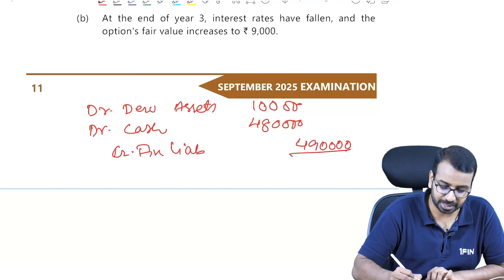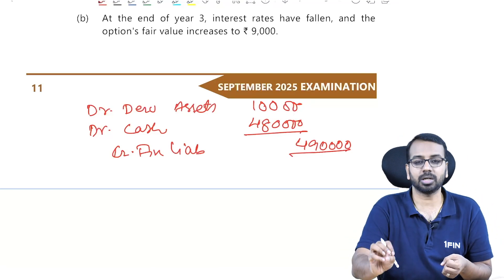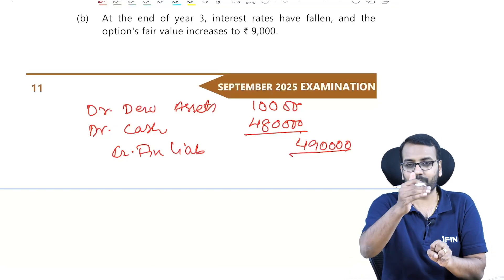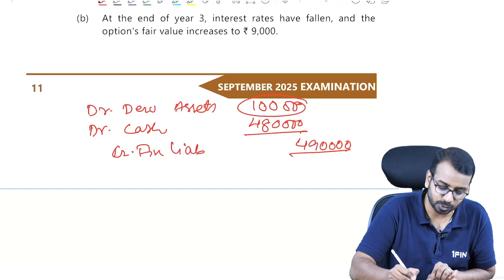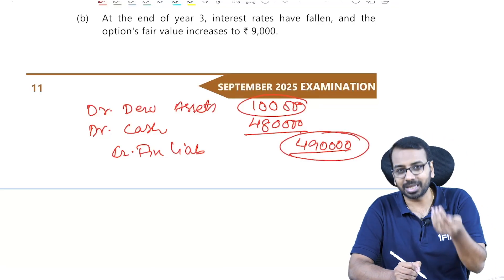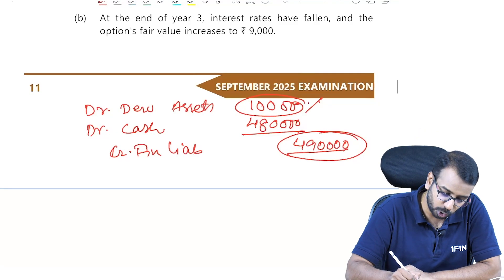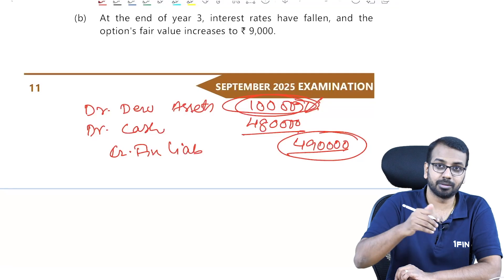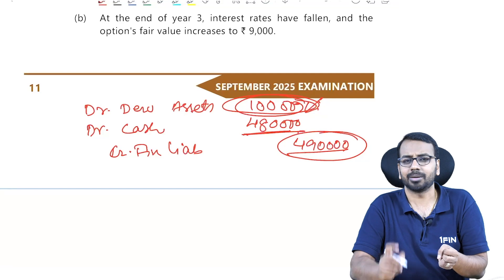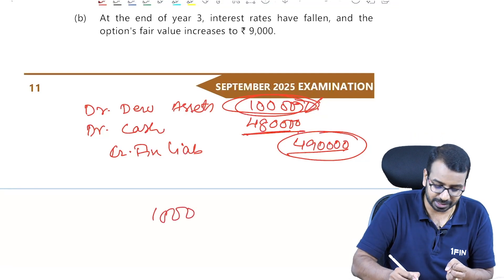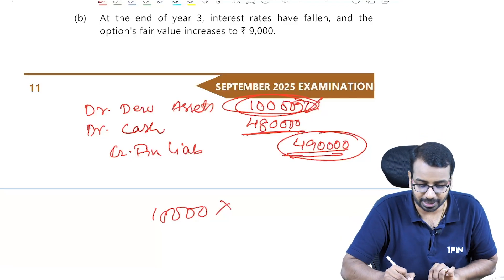Why is the financial liability 4,90,000 and not 4,80,000? Think of it this way: we took a loan of 5,00,000, incurred 20,000 cost, so net loan received was 4,80,000. But we also got an option — the value of the option is 10,000. So the total value of the liability is 4,90,000. Alternatively, if I needed this option separately, I would have paid 10,000 to the other party. I received 4,80,000 net but did not pay the 10,000 separately, so net net, the value of the liability is 4,90,000.